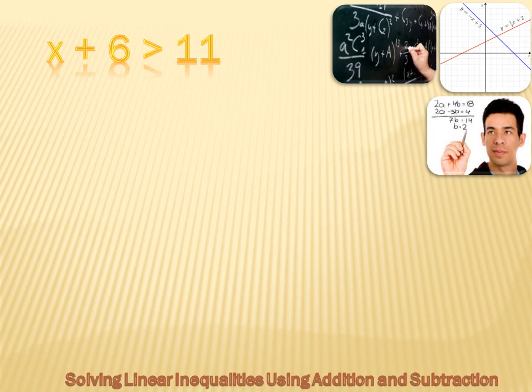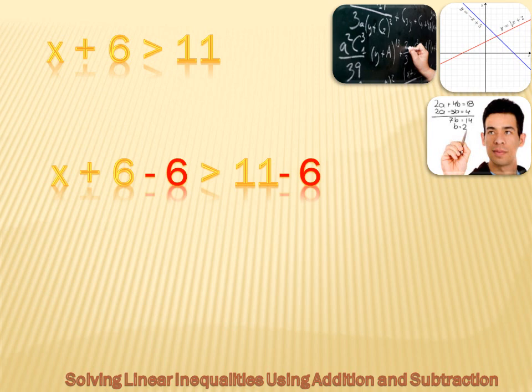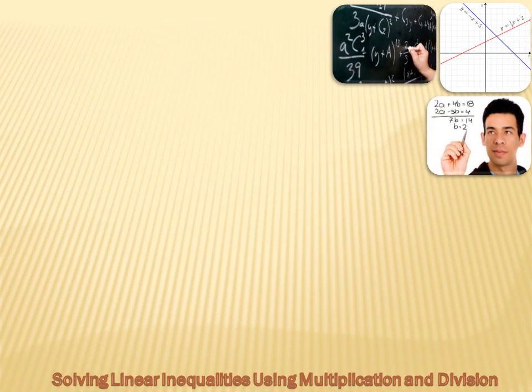For example, if x plus 6 is greater than 11 and you're asked to solve for x, you subtract 6 from both sides of the inequality. The 6 disappears on the left side, and you get x is greater than 5. Solving inequalities using addition or subtraction is just like solving an equation — add or subtract the same number to both sides and everything remains the same.